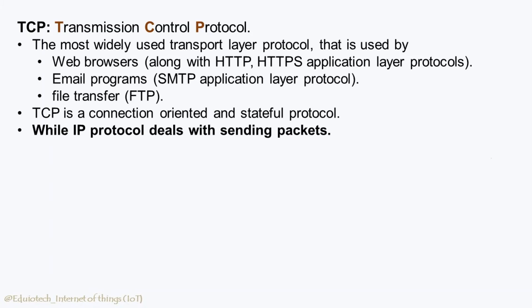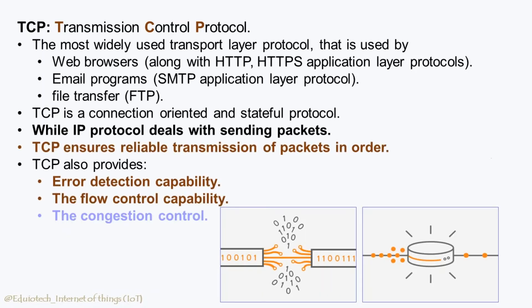TCP — Transmission Control Protocol — is the most widely used transport layer protocol, used by web browsers along with HTTP and HTTPS, email programs using SMTP, and file transfer using FTP. TCP is a connection-oriented and stateful protocol. While IP deals with sending packets, TCP ensures reliable transmission of packets in order. TCP also provides error detection so duplicate packets can be discarded and lost packets retransmitted. Its flow control ensures the sender doesn't transmit faster than the receiver can process, and its congestion control helps avoid network congestion collapse.